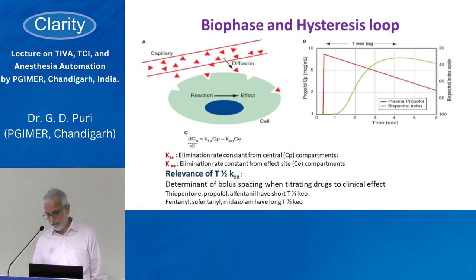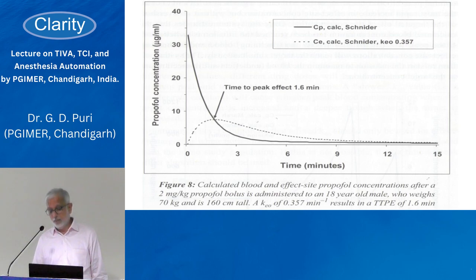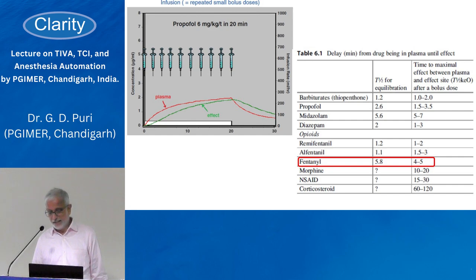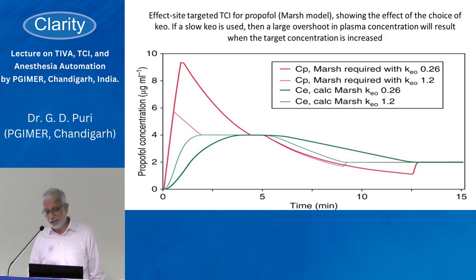After a propofol bolus, the blood concentration rises quickly, but effect-site concentration takes time to increase. By the time plasma concentration is decreasing, the effect-site concentration peaks, then slowly falls — taking time to fall below the recovery concentration. The concept of time to peak effect is defined by the equilibration constant KEO. A longer time to peak effect means a smaller KEO, while a shorter time to peak effect means a larger KEO.